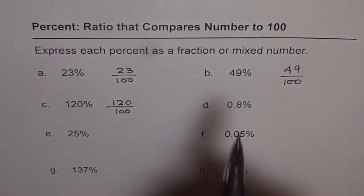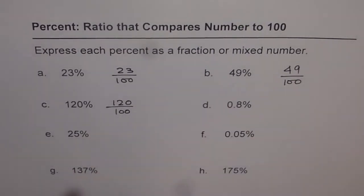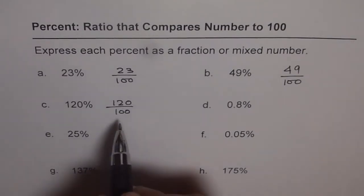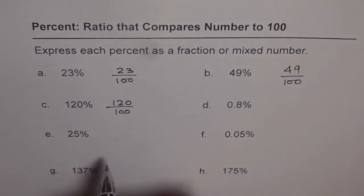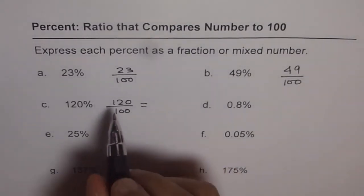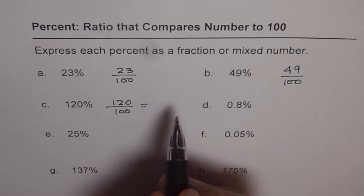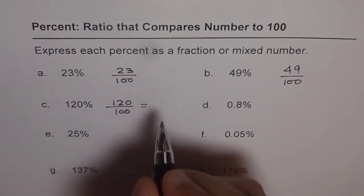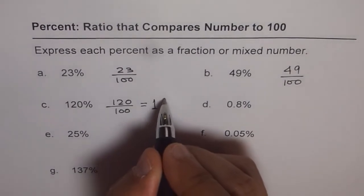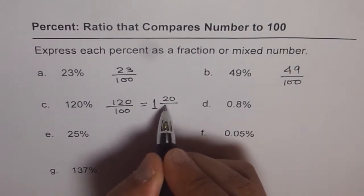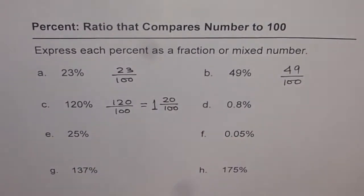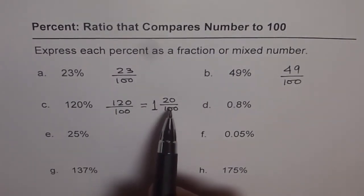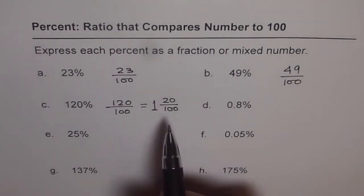Now this could be written as a mixed number. It is an improper fraction. So we could always write this as a mixed number. 120 means 100 plus 20. So 100 out of 100 is one whole and you are left with 20 out of 100. So that is one way of writing it. Well at times, you can simplify this also. I am not doing it at present, but you could always do it.